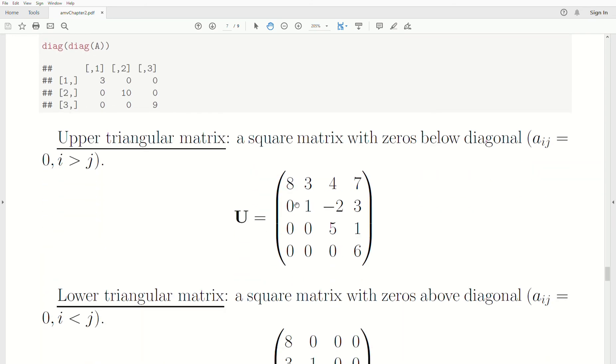So now an upper triangular matrix is a square matrix with zeros in the lower portion of it. Now, some of the numbers in the diagonal or above, or the upper part of the matrix, can be zero. But to be an upper triangular matrix, then these lower numbers have to be zero, the lower triangular part.